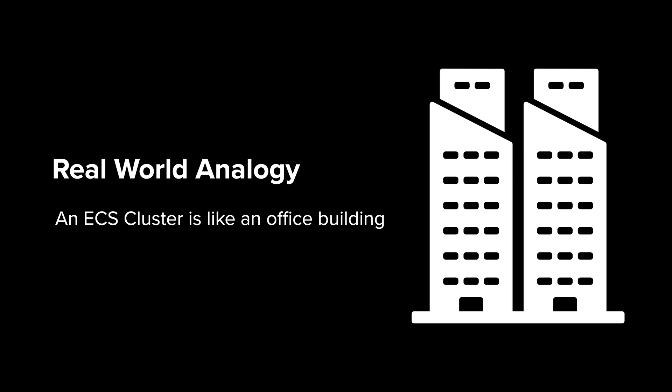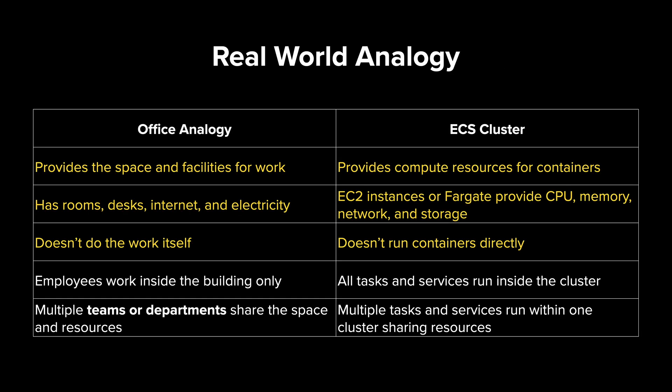Let's use a real-world analogy. You can think of an ECS cluster as an office building. The office building provides the space and essential resources — like rooms, desks, internet, and electricity — but it doesn't actually do the work. Similarly, an ECS cluster doesn't run containers itself, but provides the environment, using EC2 instances or Fargate, where containers can run. Just like employees must work inside the office building, all your containers must run inside the ECS cluster — nothing operates outside of it. And just like a building can host multiple departments, an ECS cluster can run multiple tasks and services, all sharing the available compute and network resources efficiently. The ECS cluster is not where the work is done — it's the foundation that makes the work possible.